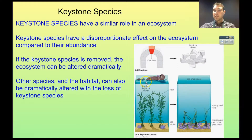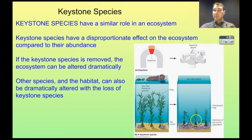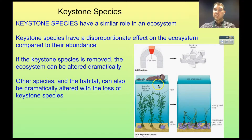Sea otters eat sea urchins. So if you remove the sea otters, the numbers of sea urchins increase since they don't have a predator anymore. Since the numbers of sea urchins increase, the amount of kelp they eat also increases. If you remove the kelp, you remove food for other species in the ecosystem, and this can lead to big impacts. So the sea otters are very important, even though their numbers might be relatively few.